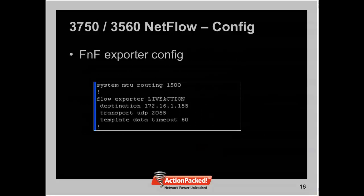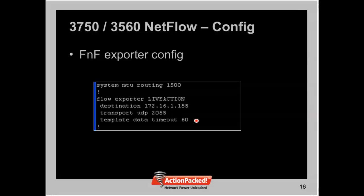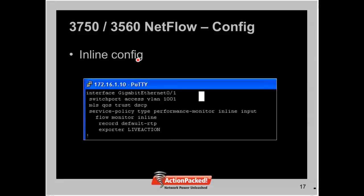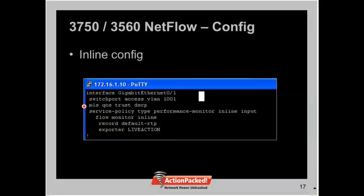Here is the flexible NetFlow exporter config. We're creating an exporter pointing to our LiveAction tool on the standard NetFlow port 2055, with a template data timeout of 60 seconds. The template data timeout sends the template to the collector — with flexible NetFlow and version 9, you send the template of what the records look like so the collector knows how to decode them. You also have to enable MLS QoS to get this working, so be mindful of your trust boundaries since the trust is not set up by default.